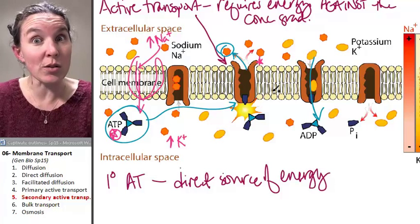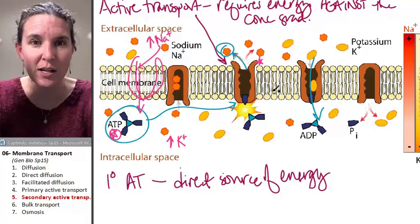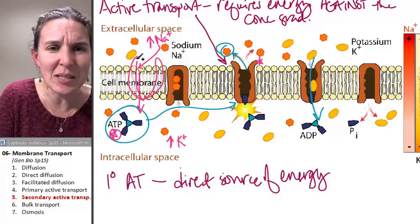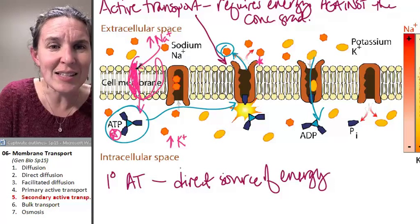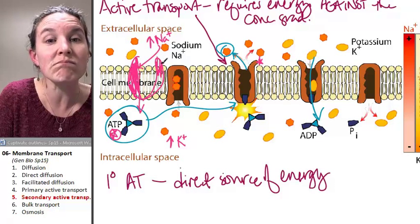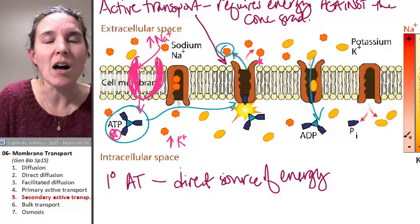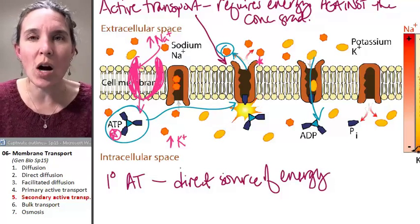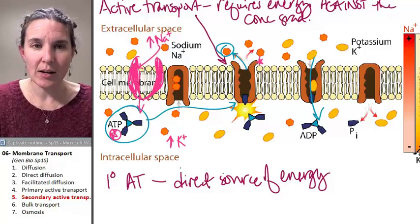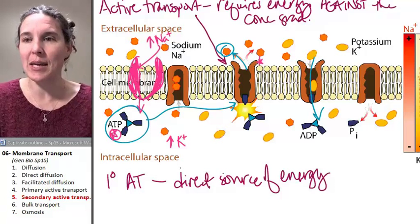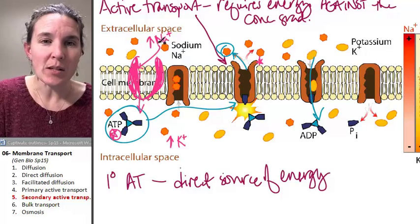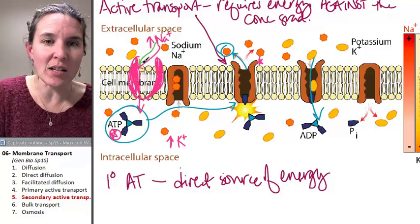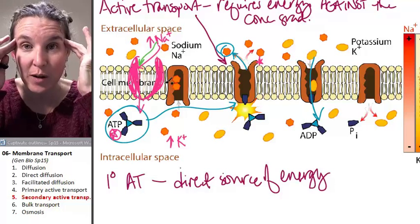Lots of ATP is being used to create this concentration gradient of sodium. Now, along comes this pink thing that says sodium over here, I'll let you in. I'll let you in down your concentration gradient. Sodium is just going to go down its concentration gradient. This is where the energy comes from.